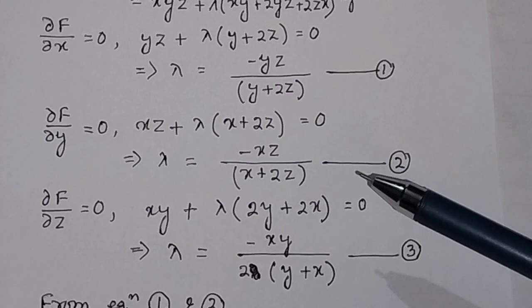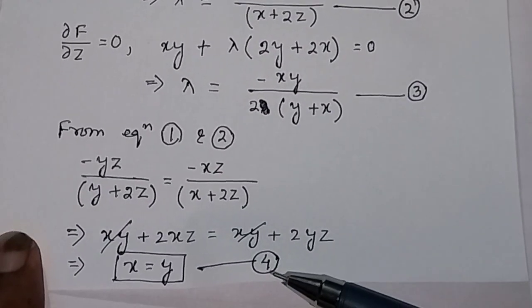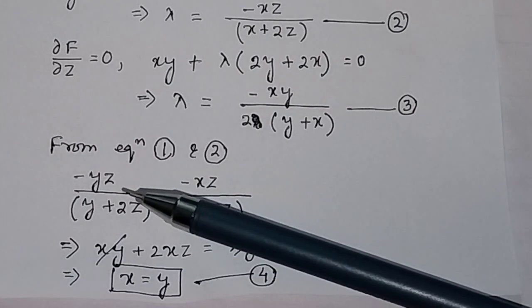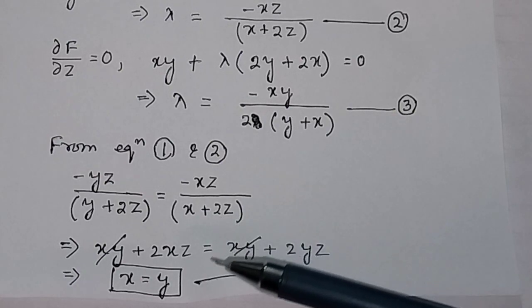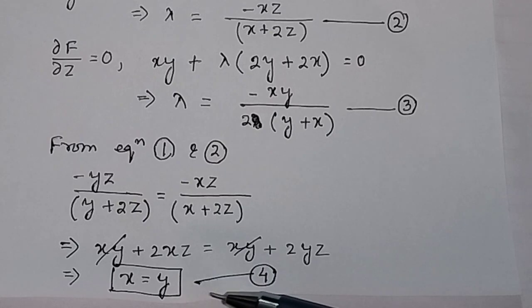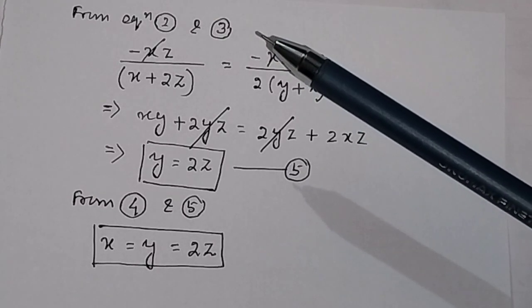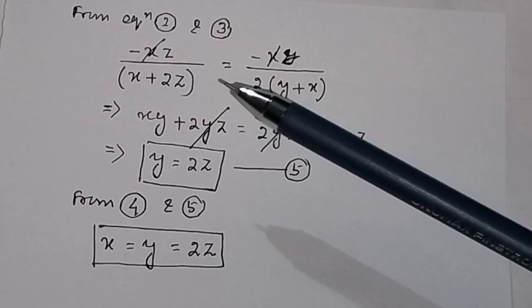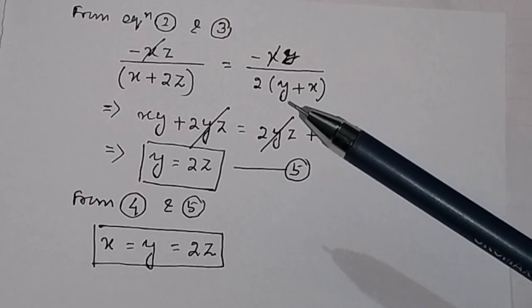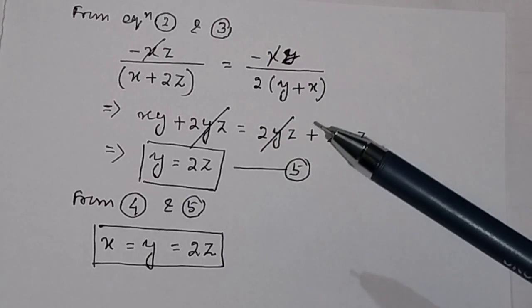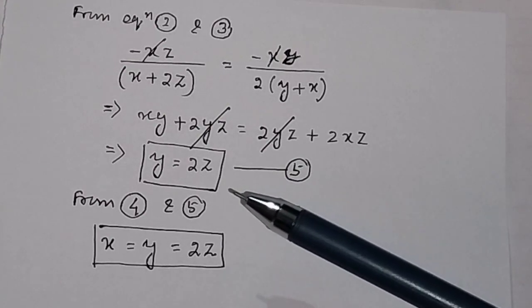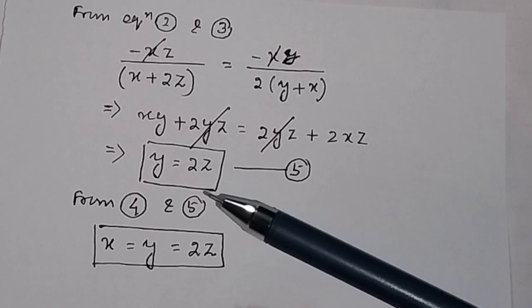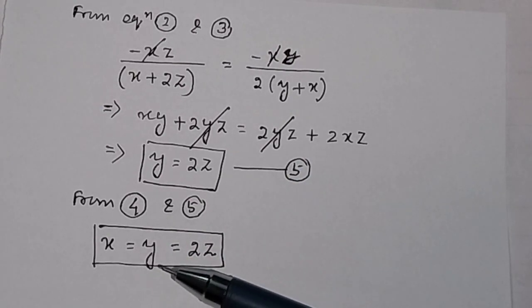Solving equations 1 and 2 together: minus yz divided by (y plus 2z) equals minus xz divided by (x plus 2z). Solving this gives x equal to y — call this equation 4. Solving equations 2 and 3: minus xz divided by (x plus 2z) equals minus xy divided by 2(x plus y). Solving this gives y equal to 2z — equation 5. From equations 4 and 5: x equal to y equal to 2z.